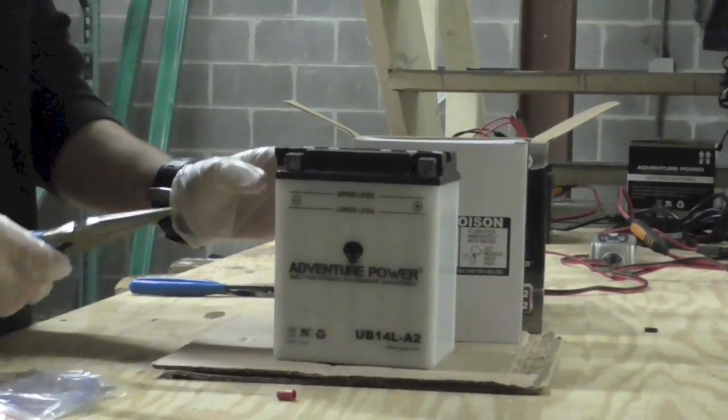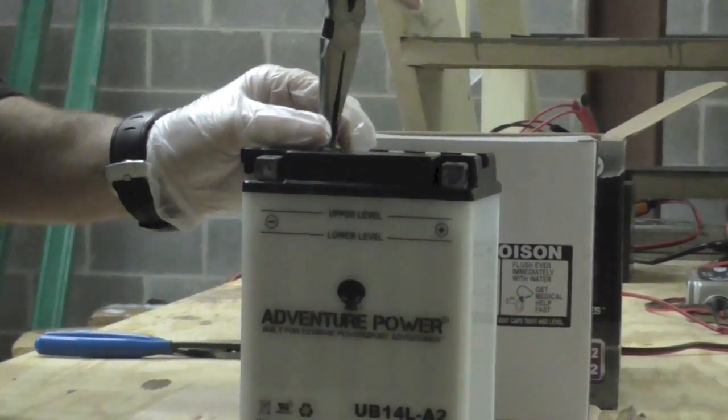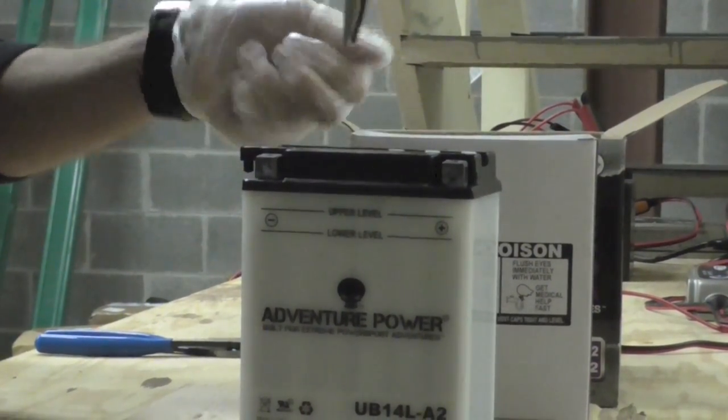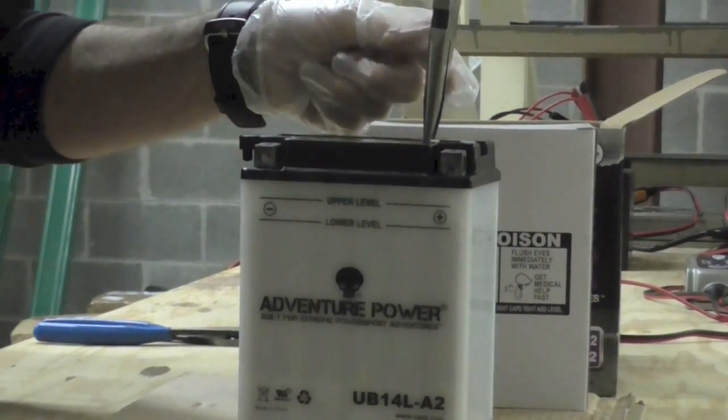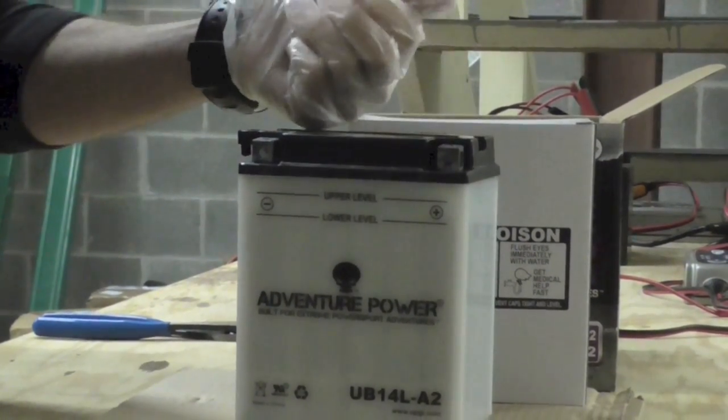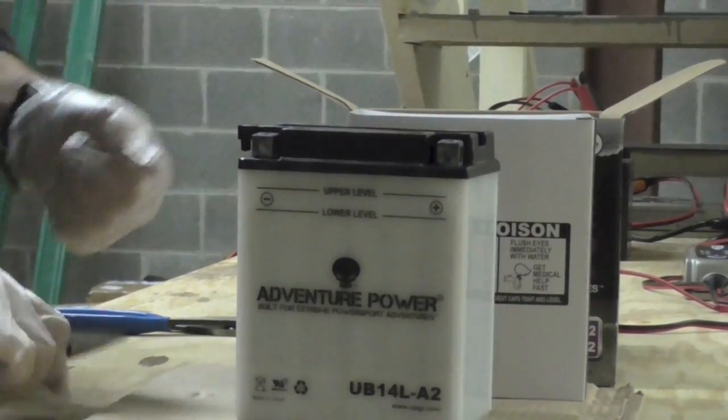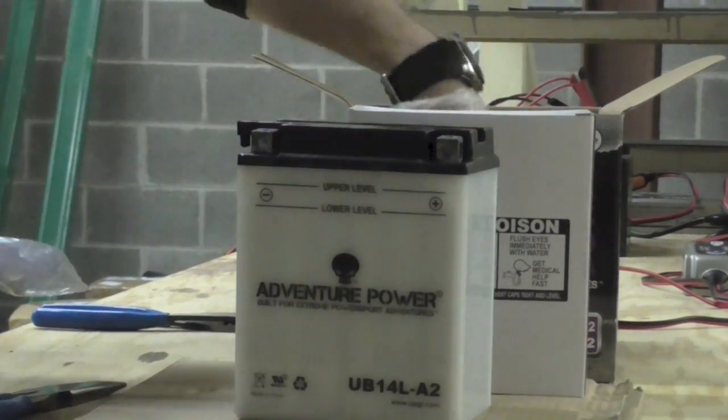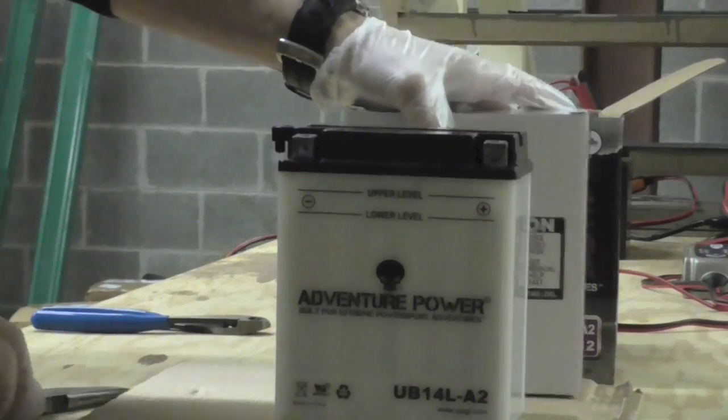Now we're going to go ahead and remove the actual caps of the battery. Any time you're removing nuts, bolts, or any of the caps, I always like to put everything back in the box so you never lose it. Now our battery is good to go.